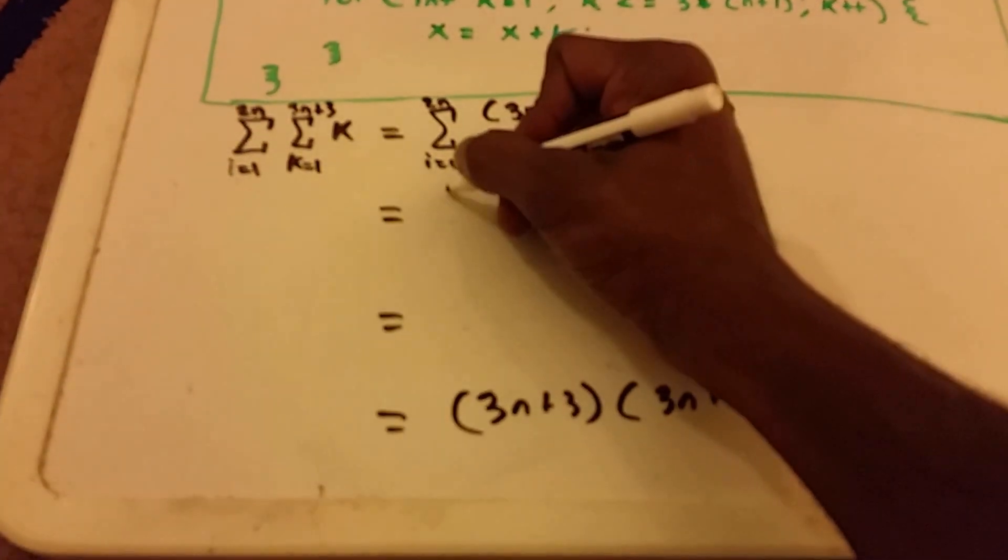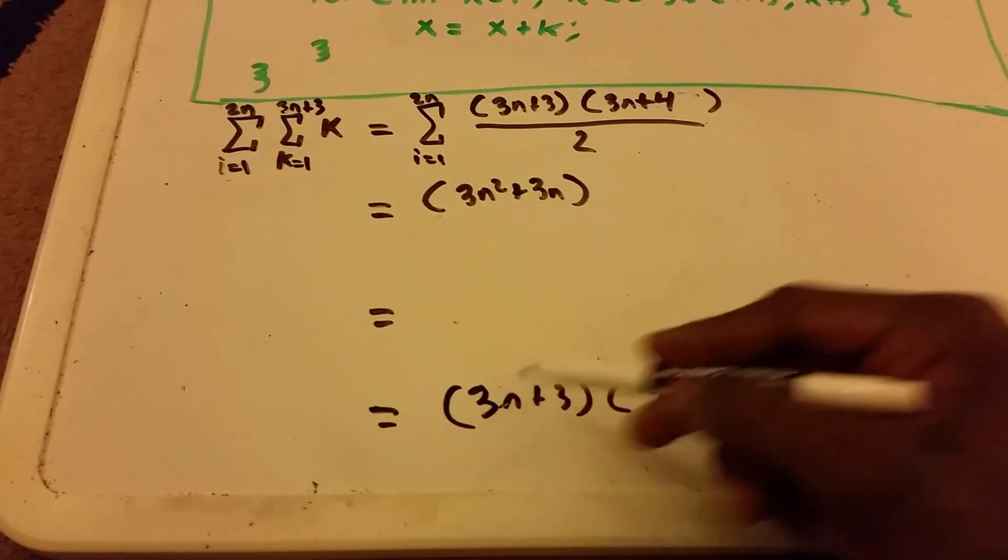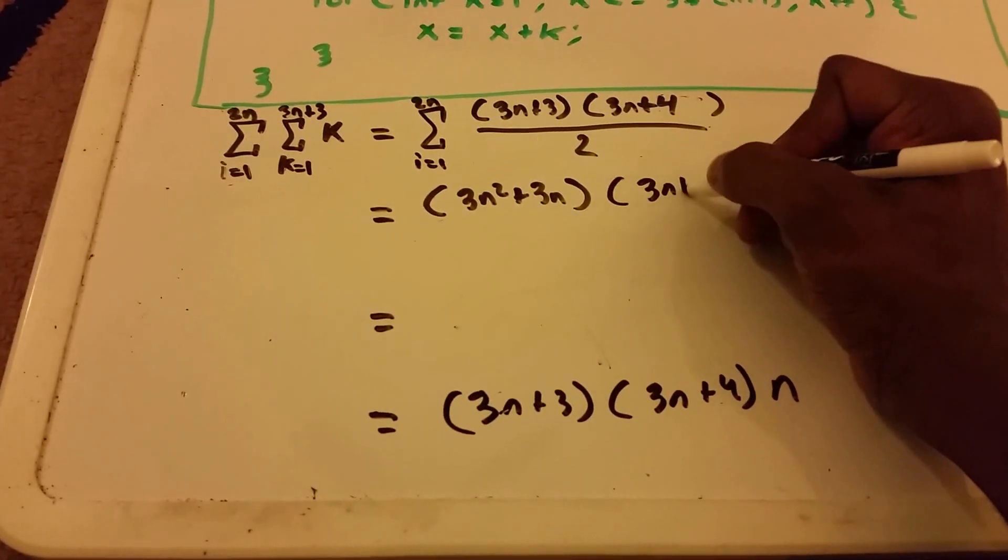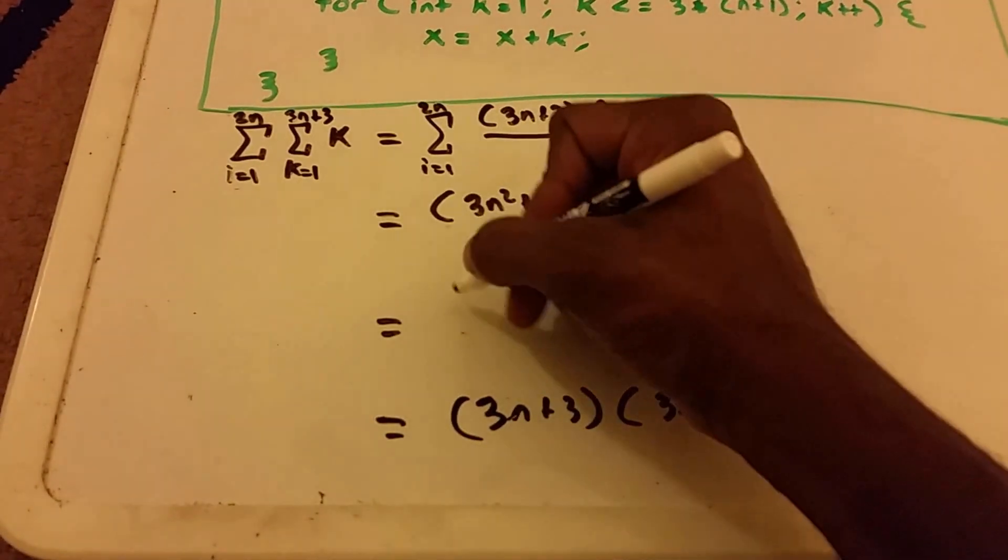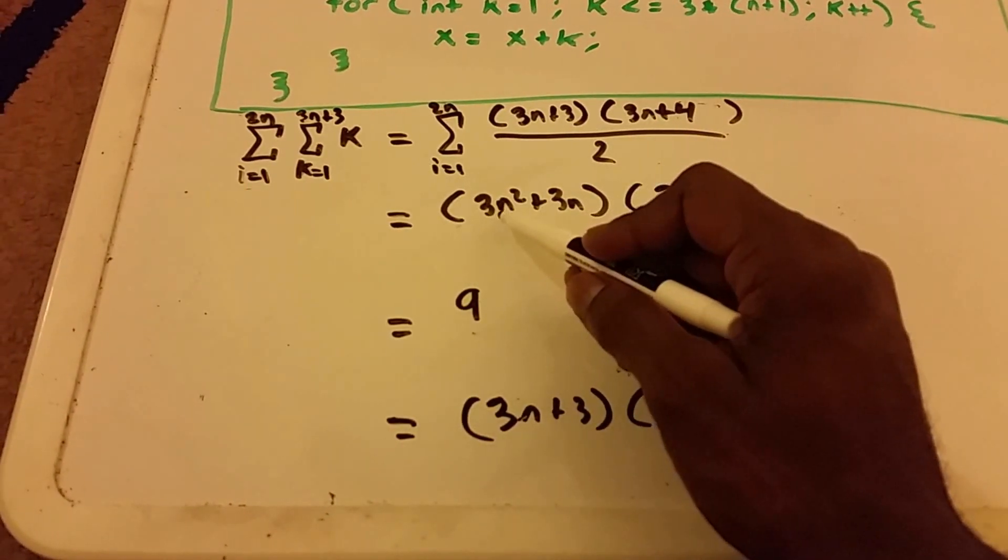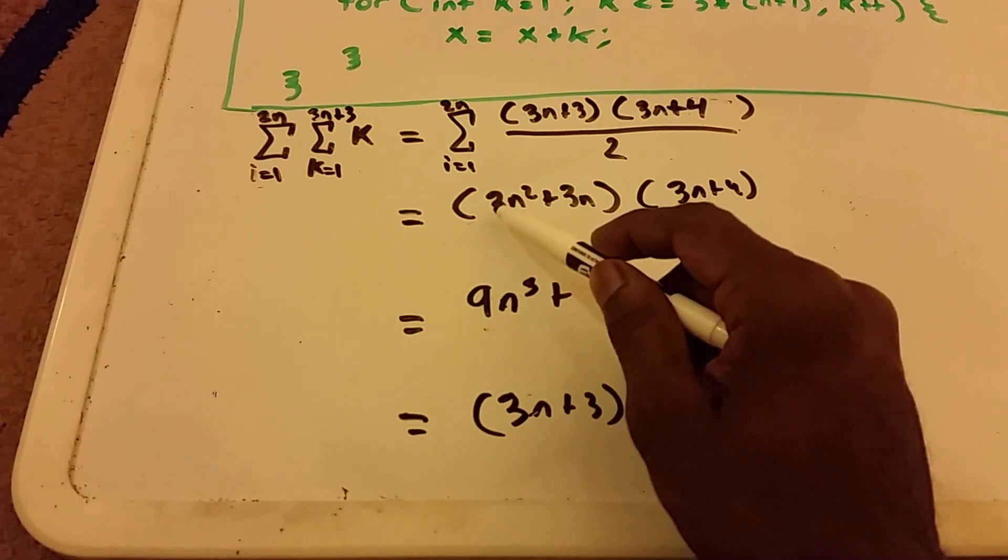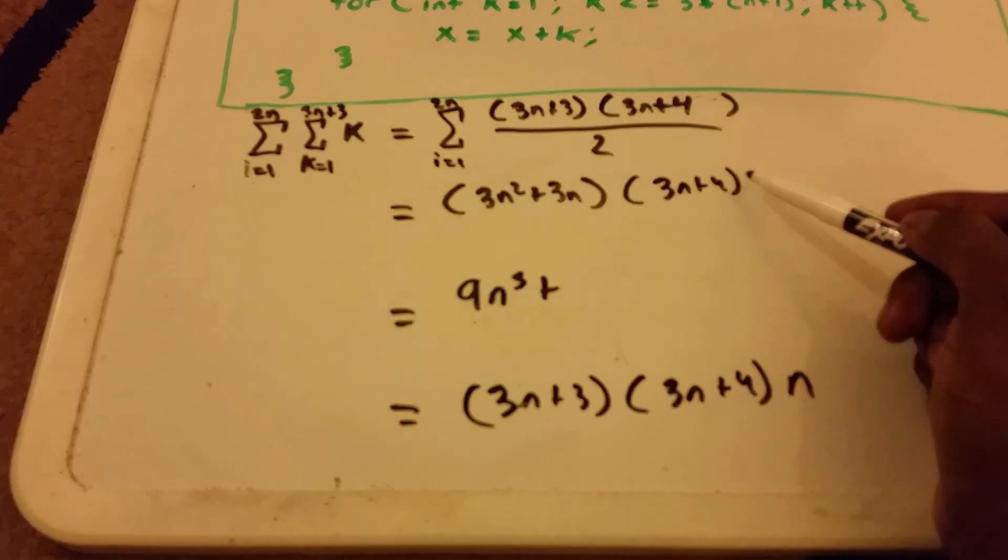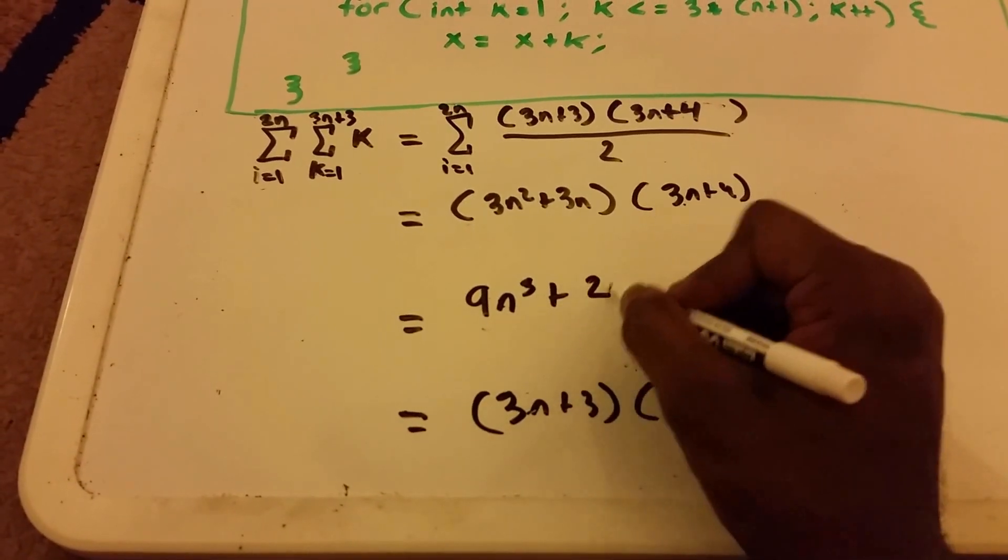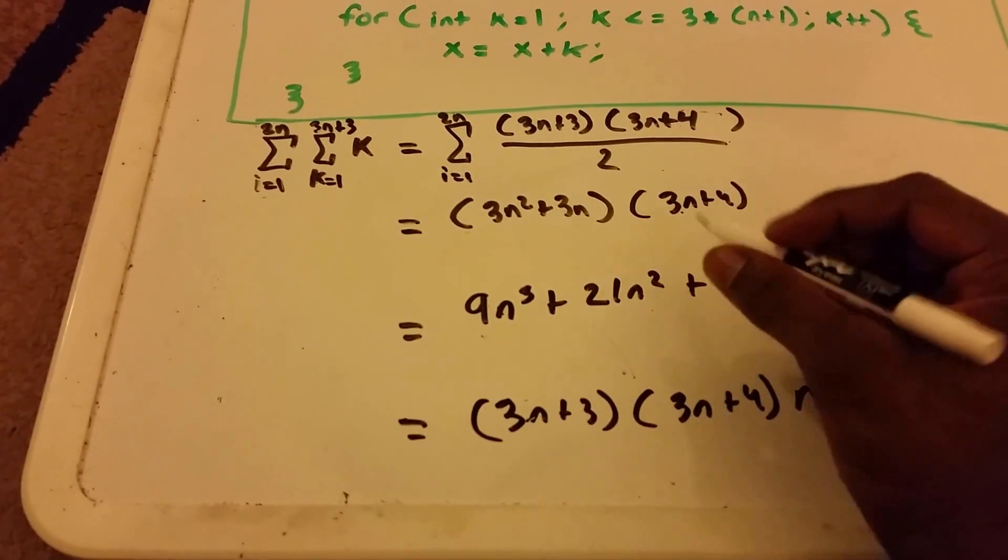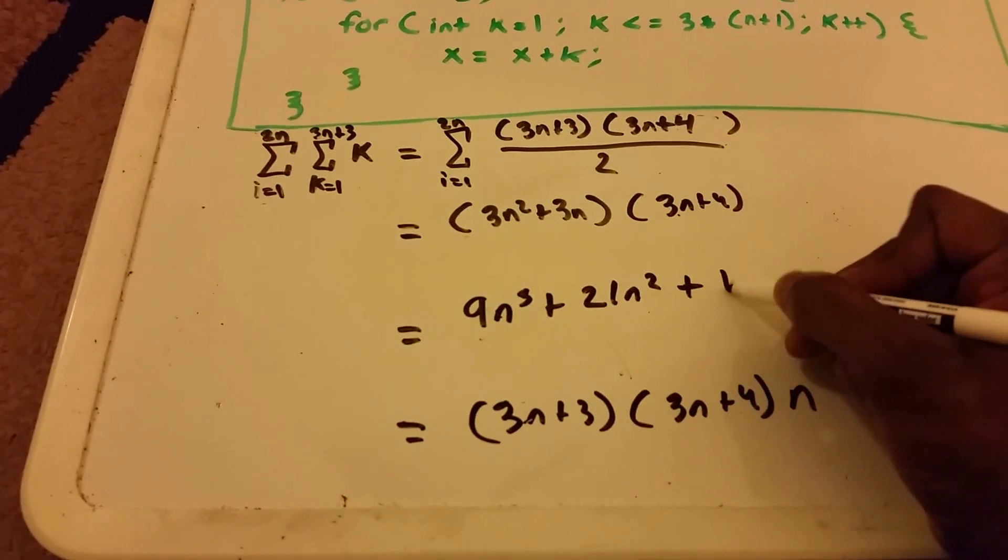Okay, so now we just got to do some multiplication. So now we get three n squared plus three n, I'm just multiplying the n over here, times three n plus four. Okay, and I'm just gonna do some foiling and we get three n squared times three n is nine n cubed, plus three n squared times four is twelve n squared, plus three times three n is nine n squared, so that's twenty one n squared, and then plus three n times four is plus twelve n.